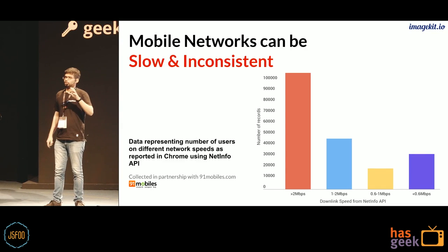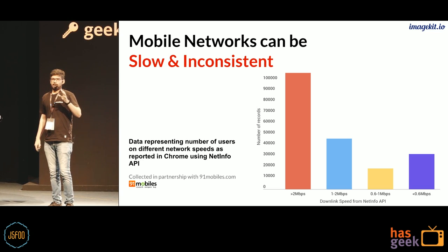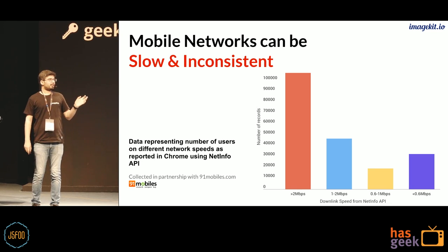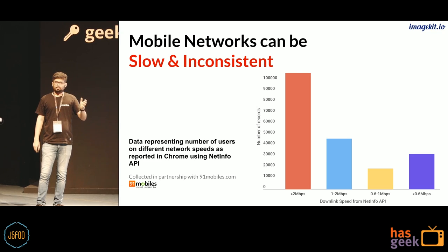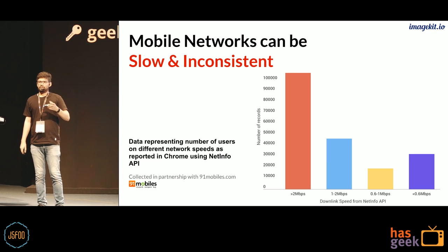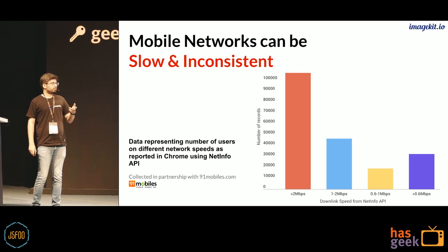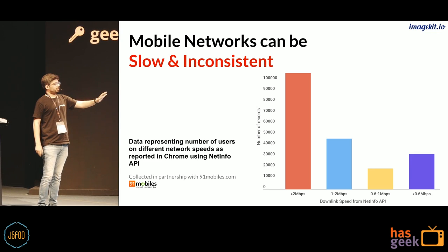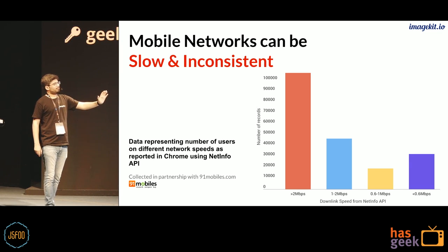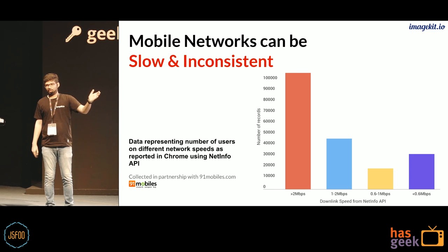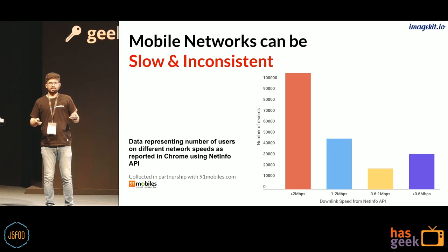We often believe our users have great 4G speeds, but the fact is not so. We did a study with one of the companies we work with, 91mobiles.com. Chrome exposes the estimated downlink speed the user is observing, and we tried to measure that for over a million users. Almost 45% of users have a speed lower than 2 Mbps, and almost 25% have a speed less than 1 Mbps. We assume our users have a really fast network, but the reality is that they do not.